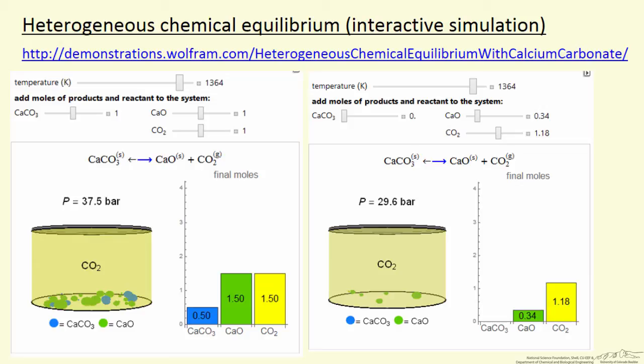We can have equilibrium. It does not satisfy the equilibrium expression, which says the equilibrium constant is equal to the pressure in bar divided by 1 bar. Because we don't have enough calcium oxide to reach 1.5 moles of CO2 in the gas phase.